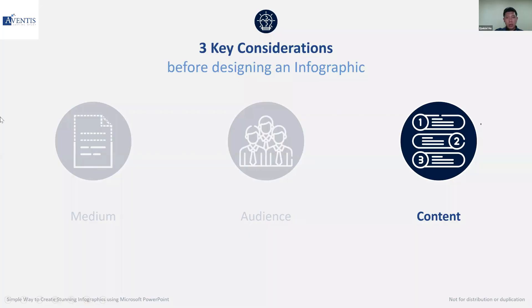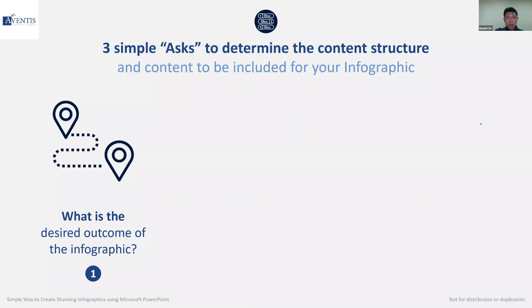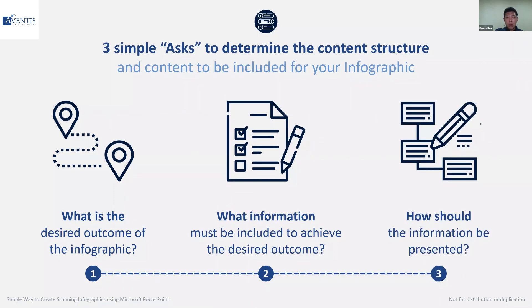The last thing to consider is the content. What type of information should be included? There's a very simple way to determine this from a huge chunk of content. All the info might come from Word documents, Excel sheets, web articles, or existing PowerPoint slides. The first thing you have to ask yourself is: what is the desired outcome of your infographic? What is the reaction or call to action that you want your audience to have after they look at it?